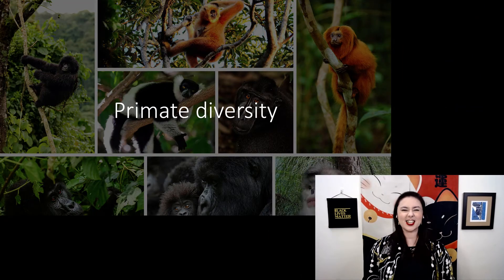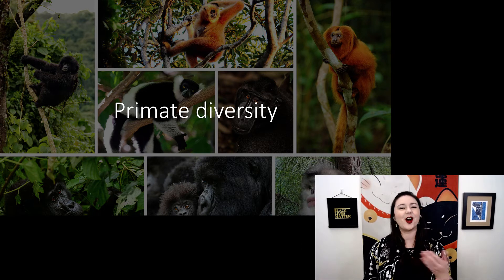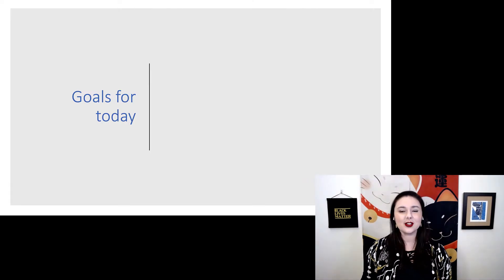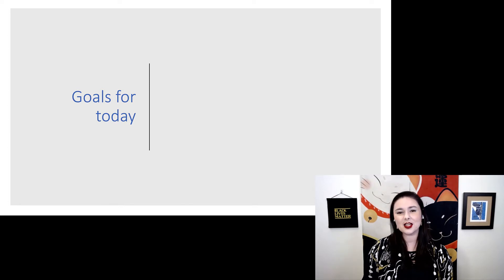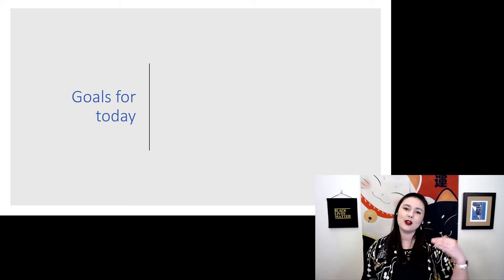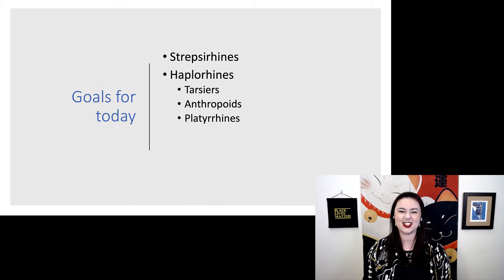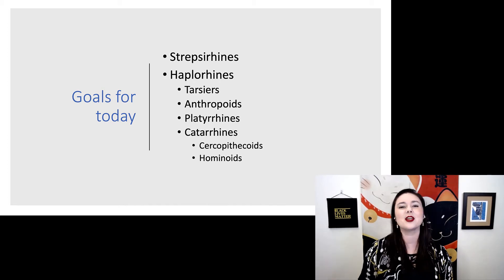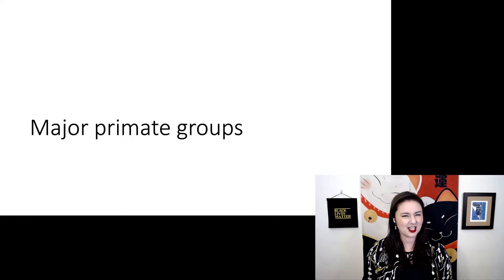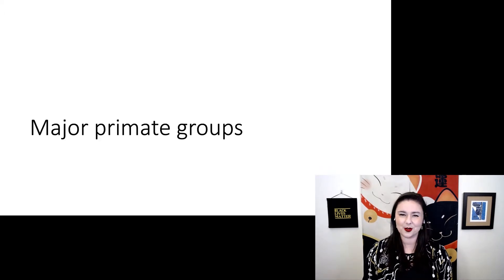One of my favorite things is getting to talk about all of the different primates out there. Our goal for today is to talk about the major primate groups. Because we're talking about a lot of different species, we organize them into a couple of higher level groups. We have our strepsirrhines on one side and on the other we have our haplorhines, and there are some subgroups organized within those. So let's get introduced to some of these important groups.